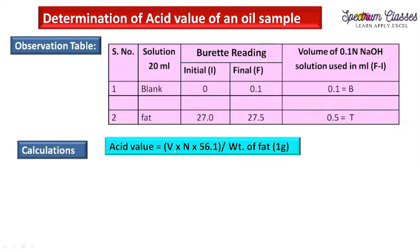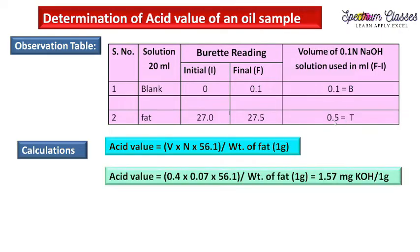The formula to calculate acid value is: (volume consumed against fat solution × normality of KOH × molecular weight of KOH) ÷ weight of fat. Volume = test minus blank = 0.4 ml; normality = 0.07; molecular weight of KOH = 56.1 g/mol; weight of fat = 1.01 g. Calculation: (0.4 × 0.07 × 56.1) ÷ 1.01 = 1.57 mg KOH per gram. This is the unit in which both acid value and saponification value are reported.